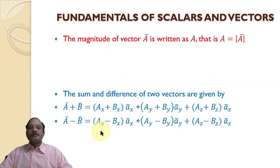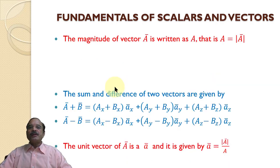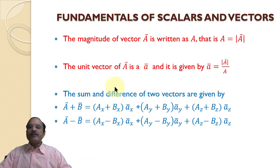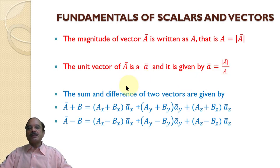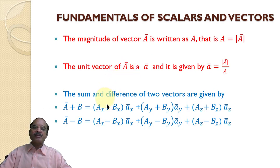The unit vector â can be calculated as vector a divided by the magnitude of vector a. We can also add and subtract vectors by simply adding the corresponding x components, y components, and z components.